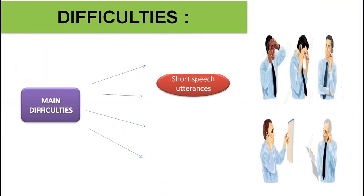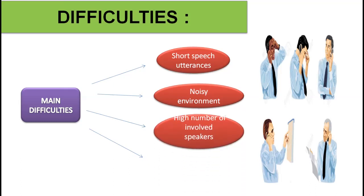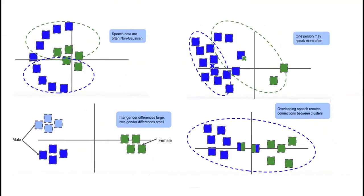Some of the difficulties of speaker diarization are short speech utterances, noisy environments, high number of involved speakers, and even speakers with similar voices. Speech data are often non-stationary, and one person may speak more often. Overlapping speech creates connections between clusters, and inter-gender differences are large.